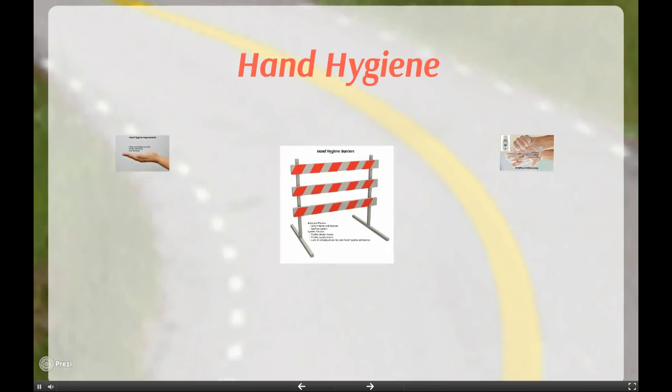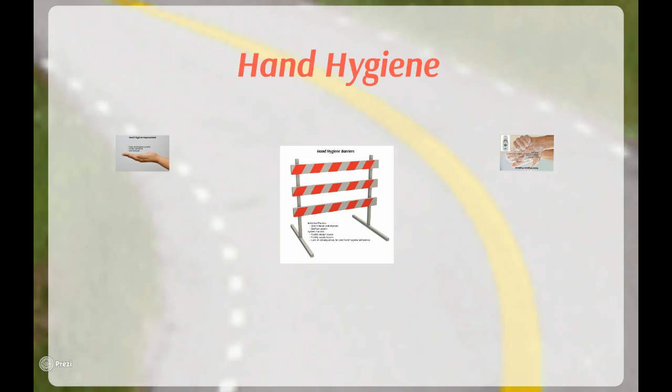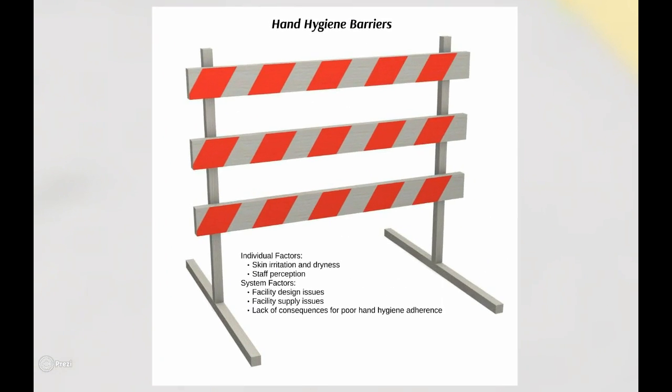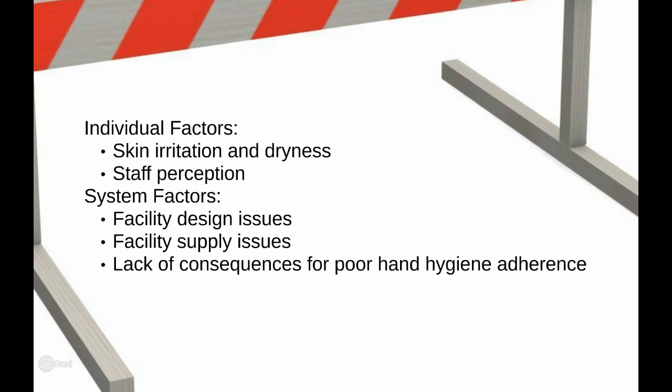The easiest and single most important factor in the prevention of pathogen transmission is good hand hygiene. There are a number of barriers to hand hygiene. Both individual and system factors contribute to poor adherence. Individual factors that negatively impact hand hygiene compliance include irritation and dryness caused by hand washing agents such as soap and alcohol-based hand rubs, and staff perception of hand hygiene issues.